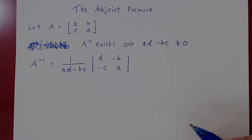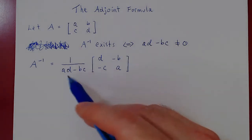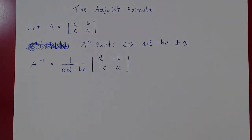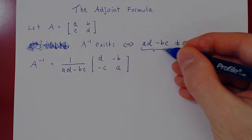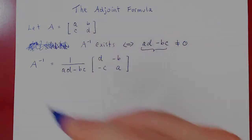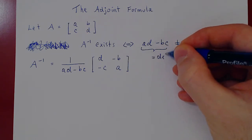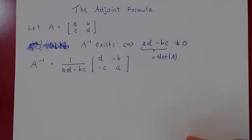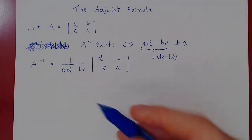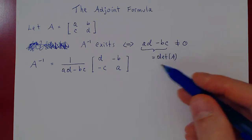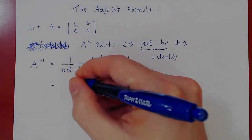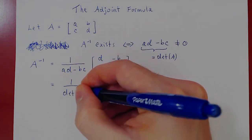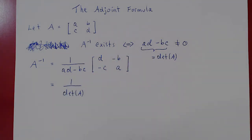And the answer is yes. All we have to do is find a way to replace each quantity here by a quantity that actually does exist for arbitrary square matrices. Let's start with the simplest quantity: AD minus BC — that is the determinant of A. So right away we can replace it. For any square matrix where the determinant of A is not 0, we can certainly compute 1 over its determinant, and this makes sense for any square matrix.